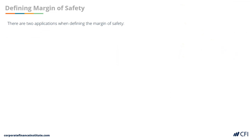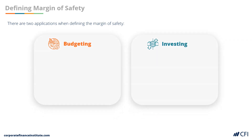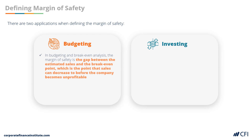There are two main applications when defining the margin of safety: budgeting and investing. In budgeting and breakeven analysis, the margin of safety is the difference between a company's estimated sales and its breakeven point. The breakeven point is the point that sales can decrease to before the company becomes unprofitable.